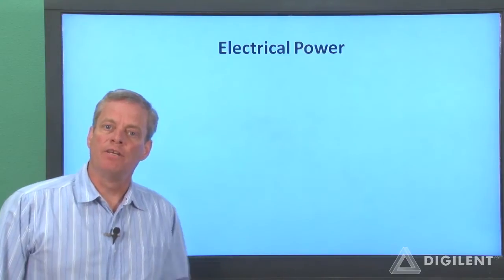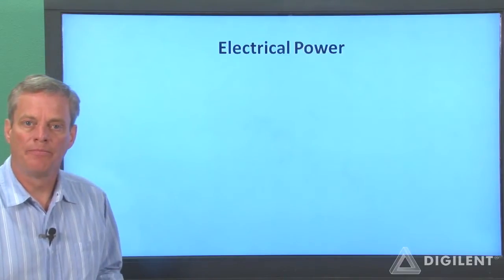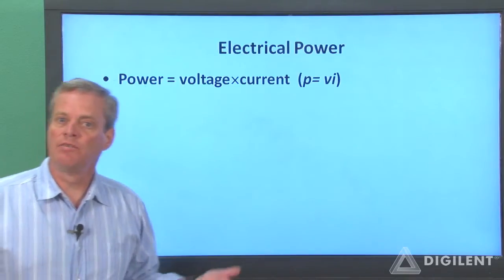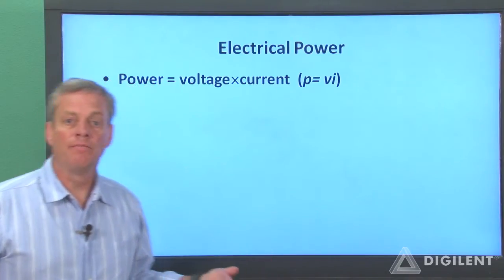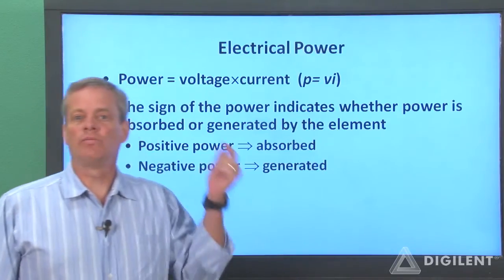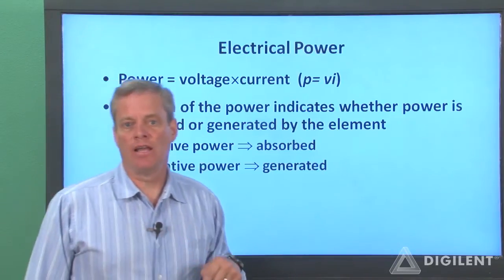First, let's review our basic definitions relative to electrical power. The power of a given circuit element is simply the product of the voltage and the current for that element. The tricky part of a power calculation, if there is one, is determining the sign of the power for an element.